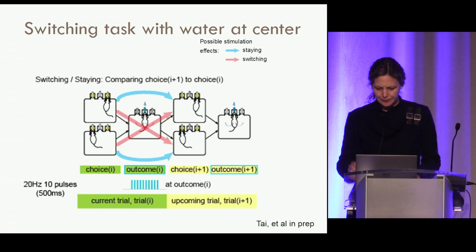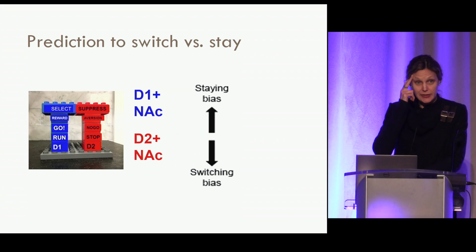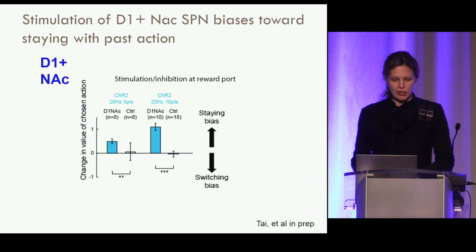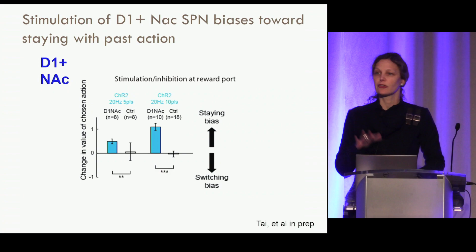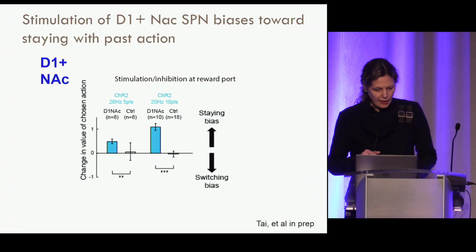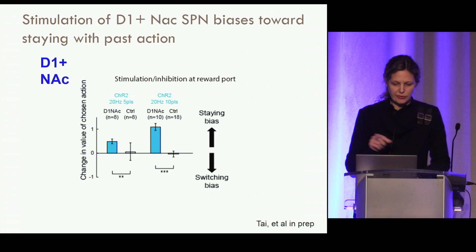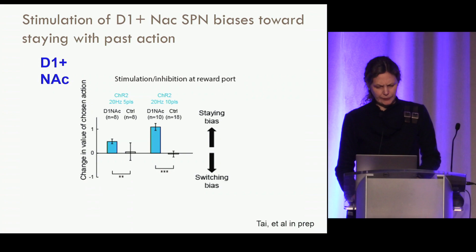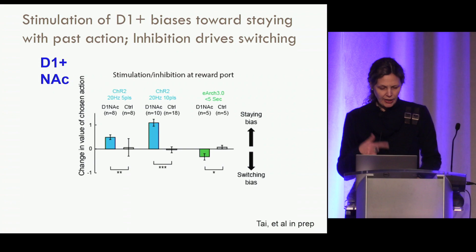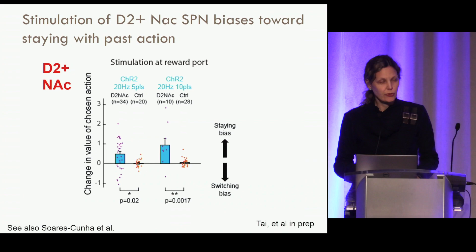From the Duplo model, you would predict D1 stimulation reinforces staying with the previous choice and D2 stimulation reinforces switching. The D1 data — channelrhodopsin at 20 Hz with either 5 or 10 pulses — shows that indeed the strength of the reinforcement staying effect grows with the number of spikes delivered to nucleus accumbens D1 spiny projection neurons. We also placed a silencing opsin in these cells and stimulated at the time the animal was drinking — by silencing these neurons we could get a switching effect.